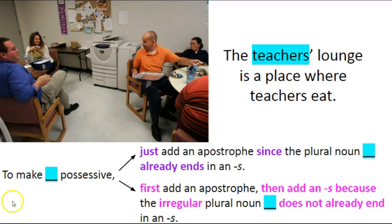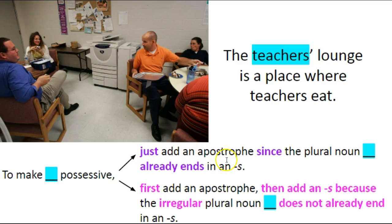Here's the teacher's lounge. The teacher's lounge is a place where teachers eat. I like seeing the word 'teachers' here and here. The first 'teachers' is a plural possessive noun — it shows that the teachers possess the lounge. The lounge is the space of the teachers; it belongs to them. The teacher's lounge is where teachers eat, and this use of 'teachers' is not possessive — it's just a regular plural noun. To make 'teachers' possessive, I know that 'teachers' is a regular plural noun, so just add an apostrophe since it already ends in an s.